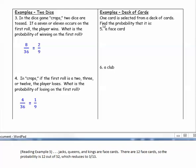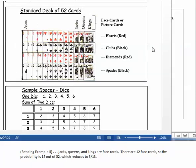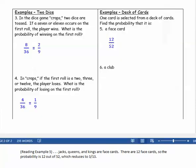Example five. One card is selected from a deck of cards. Find the probability that it is a face card. Jacks, queens, and kings are face cards. There are twelve face cards. So the probability will be twelve out of fifty-two, which reduces to three-thirteenths.